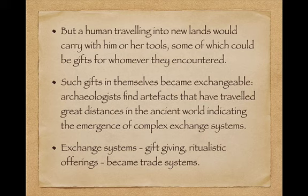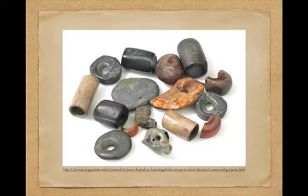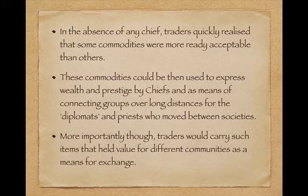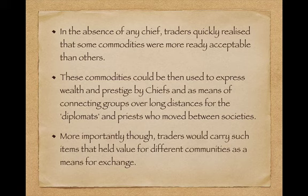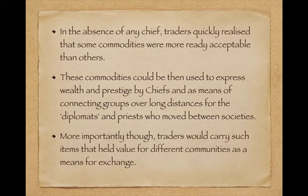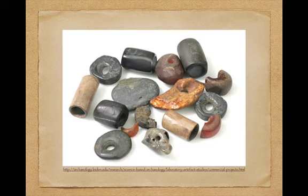Exchange systems become trade systems whether they're based initially on gift-giving or ritualistic offerings. These sorts of things could be used not just for giving — saying 'hey, look at this cool stone I've found' — but also as a form of money, as a medium of exchange. In the absence of any chief, traders quickly realised that some commodities were more readily acceptable than others. These commodities could then be used to express wealth and prestige by the chiefs, and as a means of connecting groups over long distances for the diplomats or the priests who moved between societies. More importantly, traders would carry such items that held value for different communities as a means of exchanging goods for goods or services for services. So these beautiful stone items could therefore become the first money.